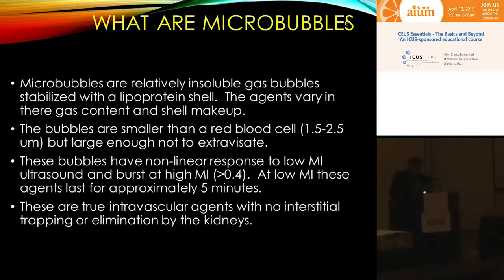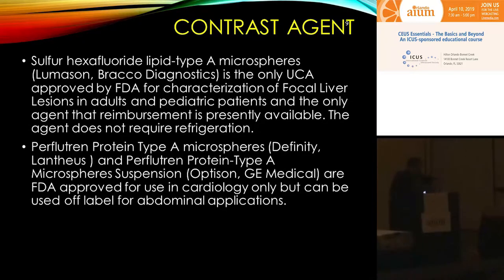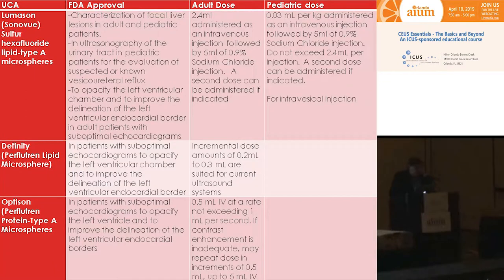These microbubbles are about the size of a red blood cell and don't extravasate. They have a non-linear response at low MI; at high MI they burst, which is helpful because we can eliminate bubbles to give a second injection. These are true intravascular agents — not excreted by the kidneys, so we do not see any contrast in the collecting system. This table shows the three agents approved in the United States: Lumison — called Sonovue in the rest of the world — is approved for liver in pediatric and adult patients, while DEFINITY and Optison are currently only approved for cardiology but can be used off-label.